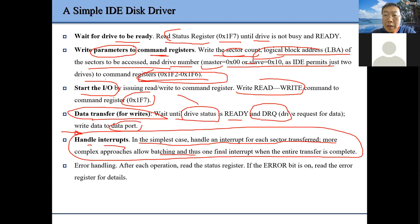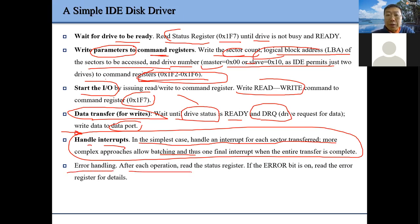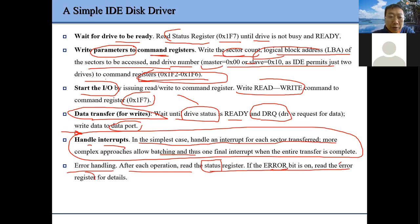Our IO driver needs to handle this interrupt — we say, who is waiting for this IO operation? Then we wake up that process and process more IO requests. If an error occurs, we need to handle those errors by reading the status register and looking at the error registers to check the detailed reason.